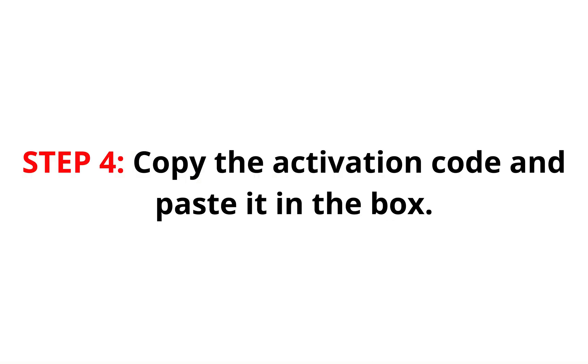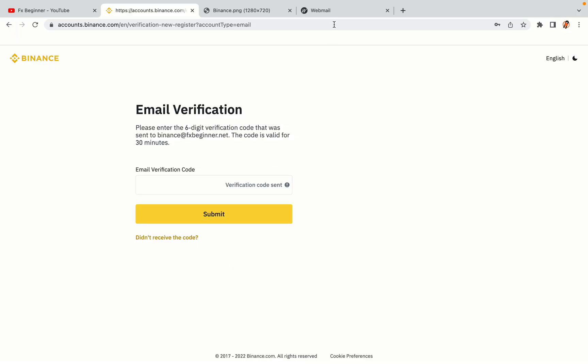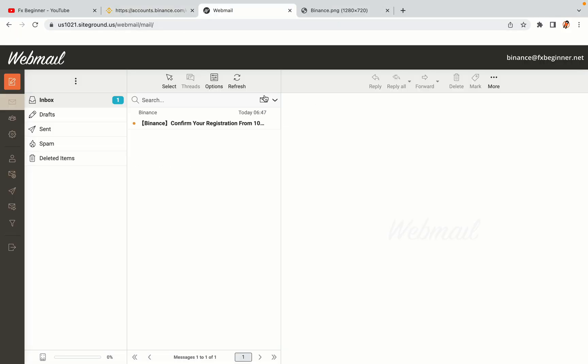Step 4: A confirmation code will be sent to your mail. Open your mail inbox, copy the code and paste it in the box to fully activate your Binance trading account.